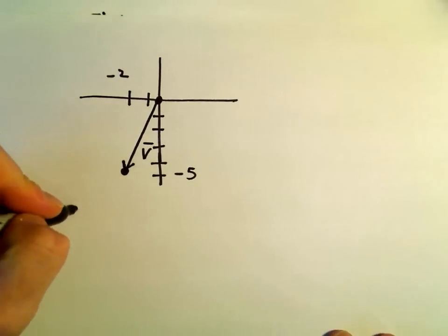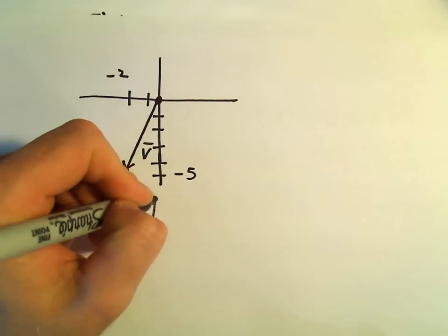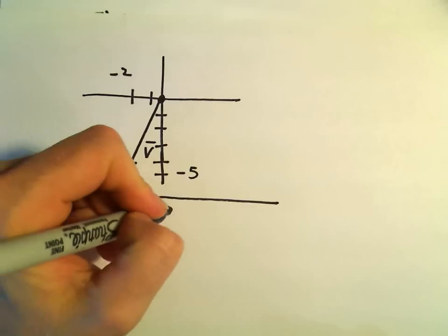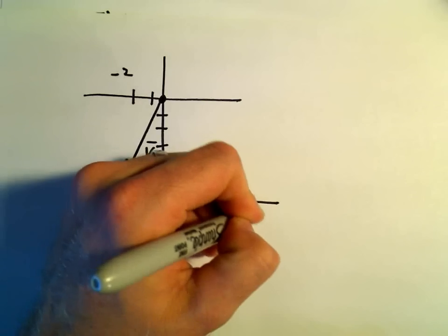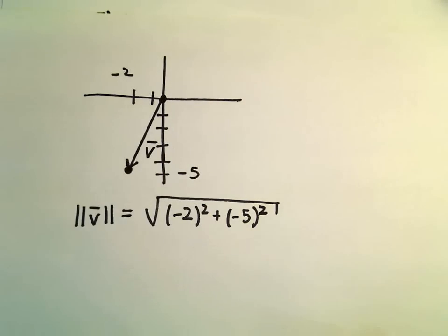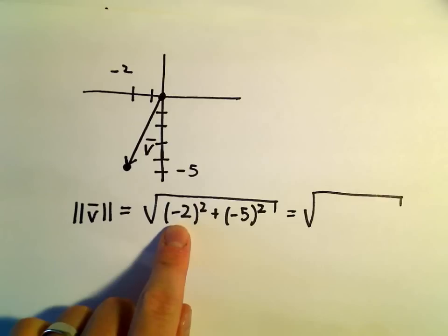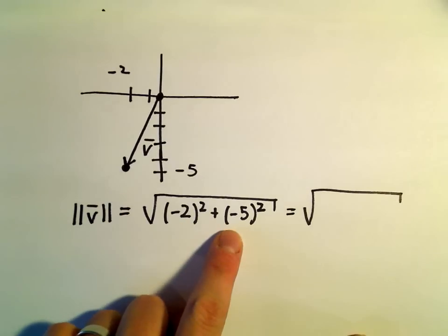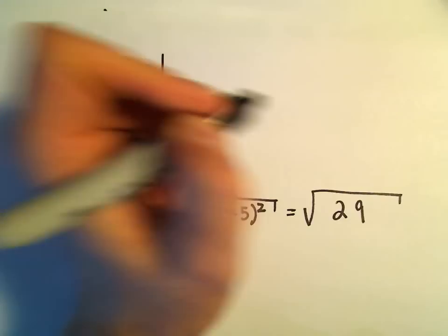To find the magnitude, you don't have to really do much other than just take each component, square it, add those together and square root it. Negative 2 squared is positive 4, negative 5 squared is positive 25, 4 plus 25 gives us the square root of 29.